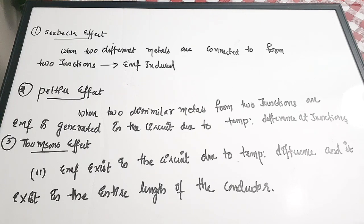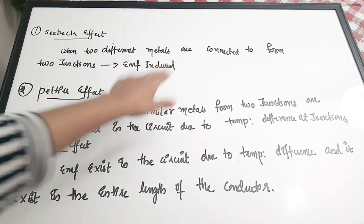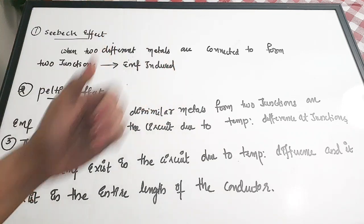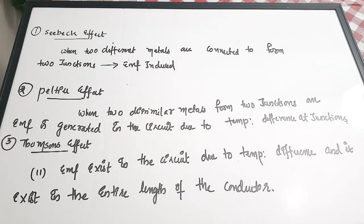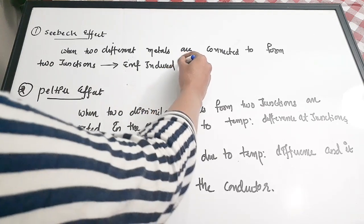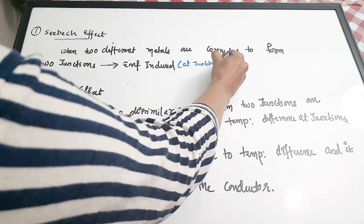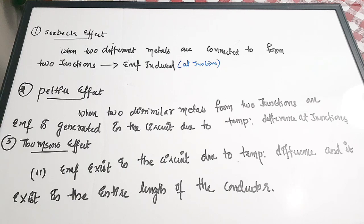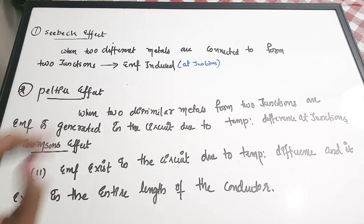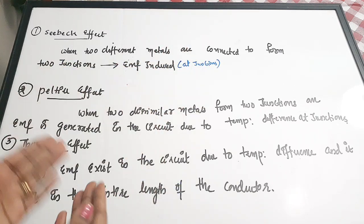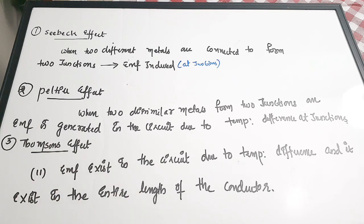The first effect explaining thermocouple working is the Seebeck effect. It states that when two different metals are connected to form two junctions, EMF is induced at the two junctions. This EMF which is induced is different for different metal combinations. In a thermocouple, the voltmeter measures the net effect of this EMF produced at the two junctions, and hence we get the temperature reading in the form of a voltage.